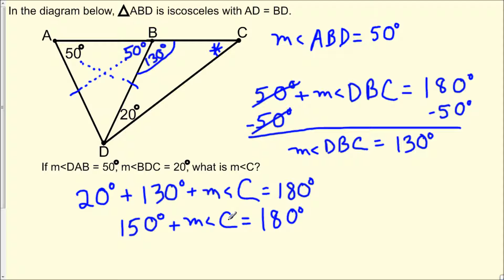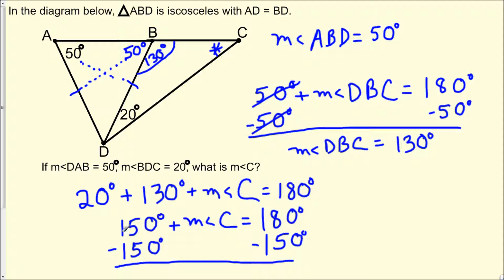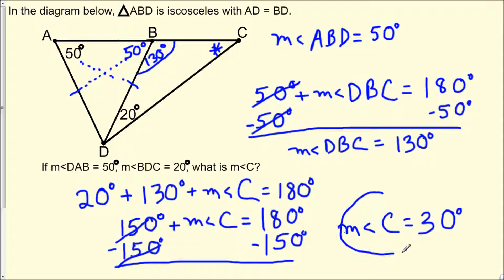The last step for solving for the measure of angle C is to subtract 150 degrees from both sides of this equation. 150 degrees minus 150 degrees cancels, and we have the measure of angle C equals 180 degrees minus 150 degrees, which is 30 degrees. So the measure of our missing angle — the answer to our problem — is 30 degrees. This concludes the video on finding the value of an unknown angle. Thank you all for watching and I hope that this was helpful.